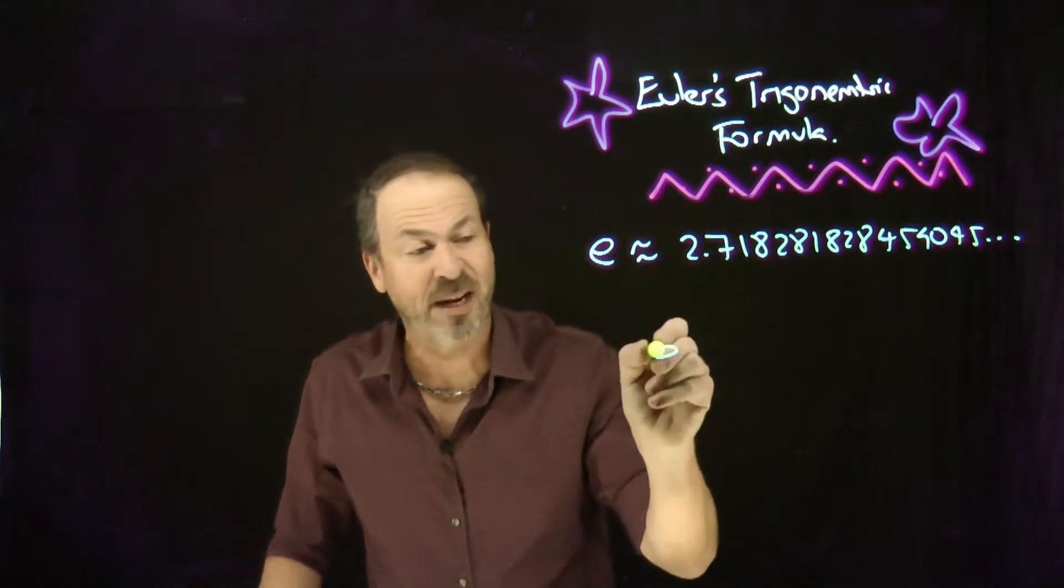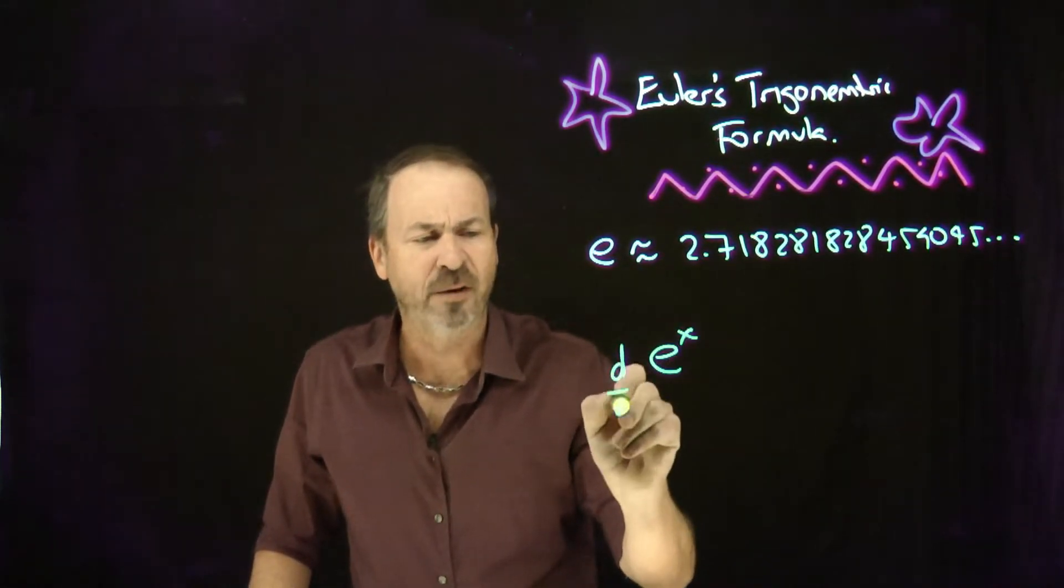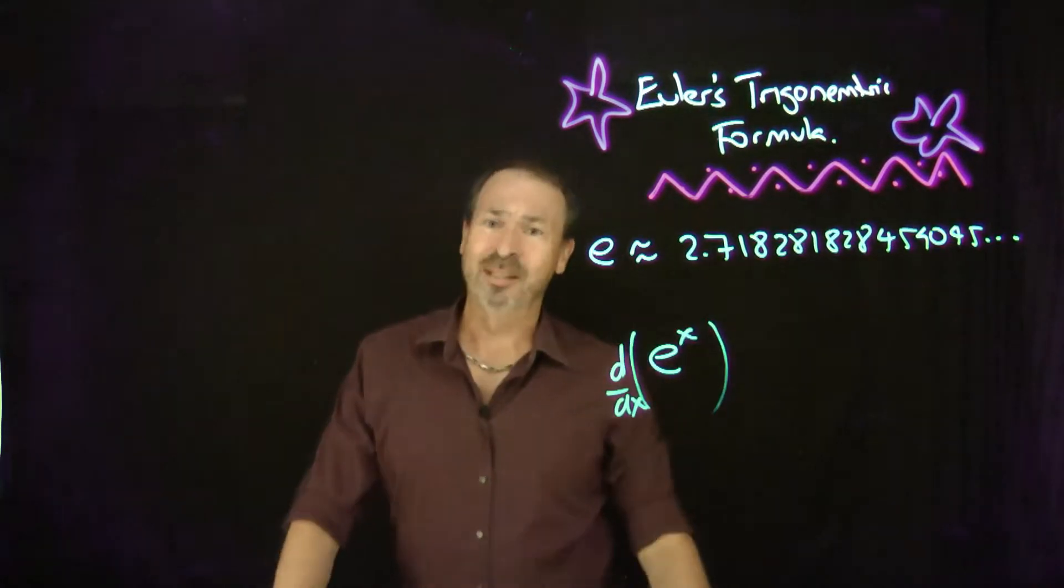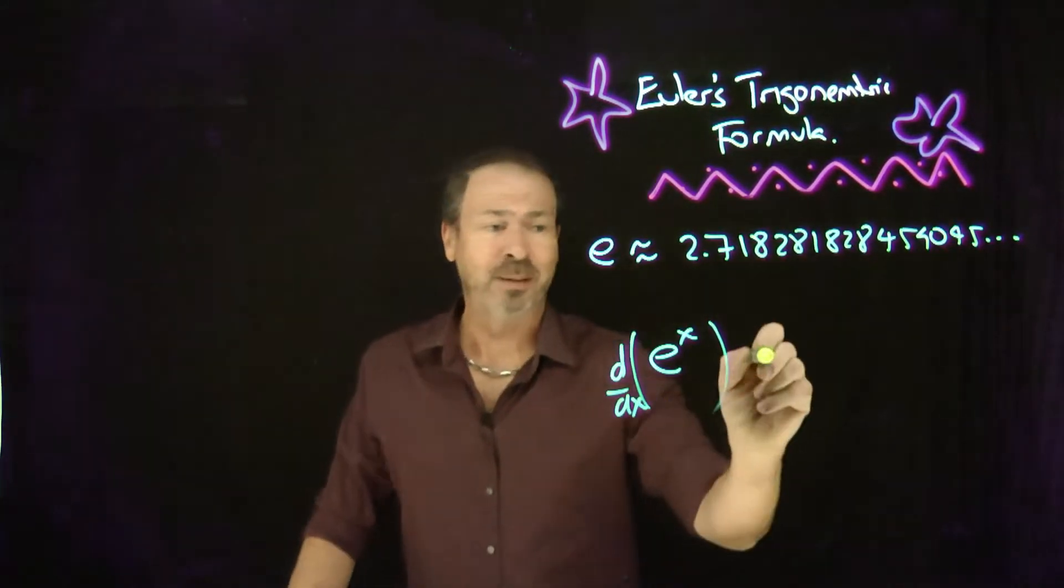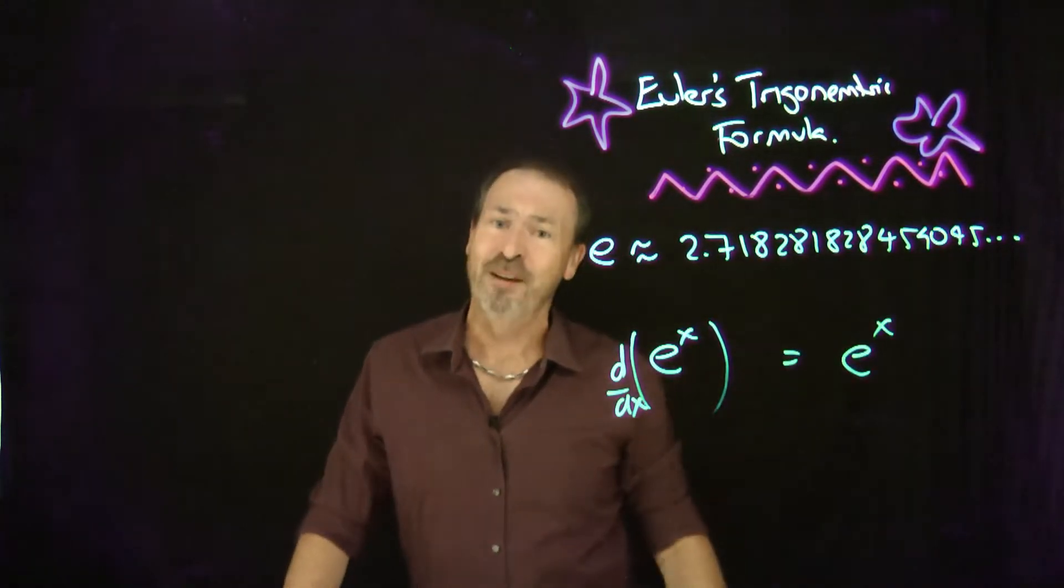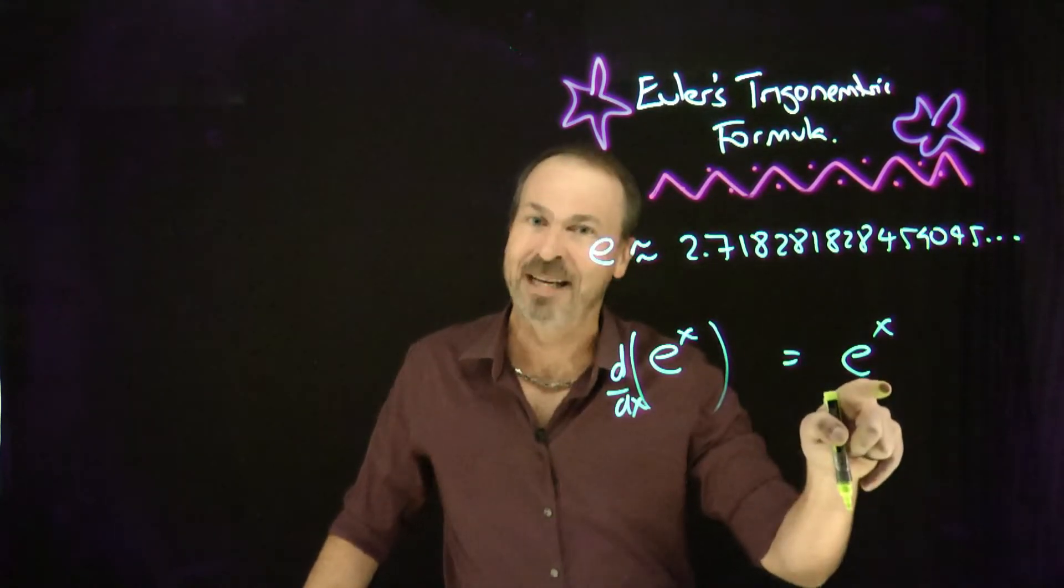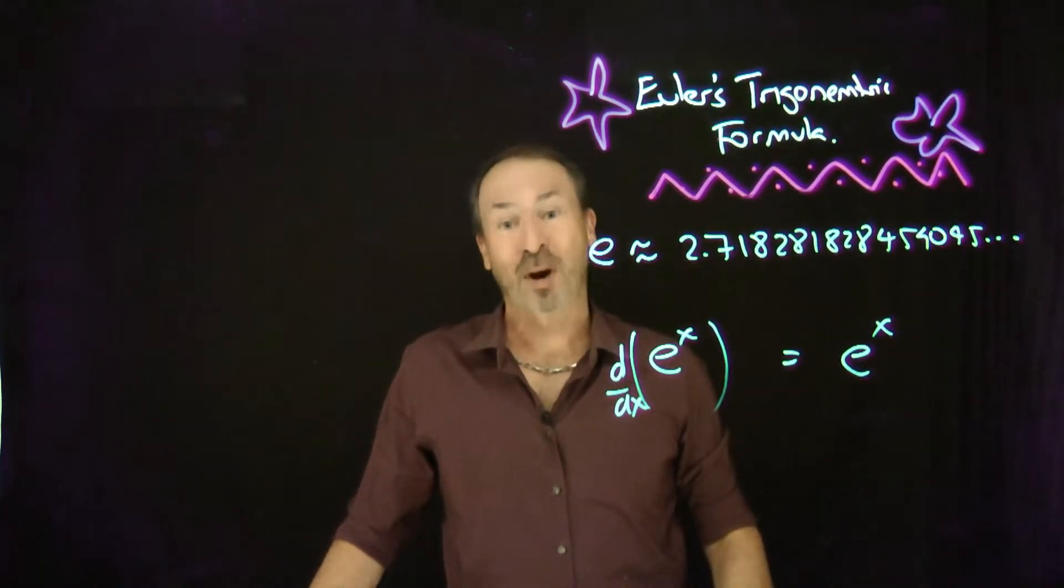But it has this incredible property. It actually makes differentiating exponential functions ridiculously easy. For example, if I use e as the base of an exponential function and ask what is the derivative, it's actually pretty darn easy. It's the simplest thing possible - it's back to being itself again. The derivative of e to the x is just e to the x. Incredible, actually.